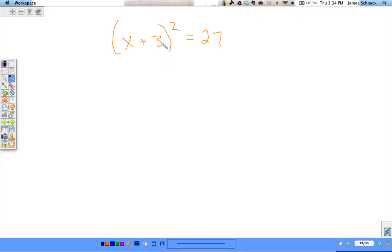So something squared equals the number. Square root both sides. x + 3 = ±√27 that simplifies. 9 times 3. So x + 3 = ±3√3.